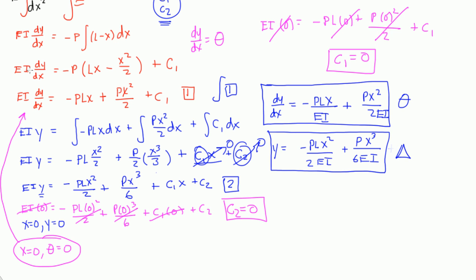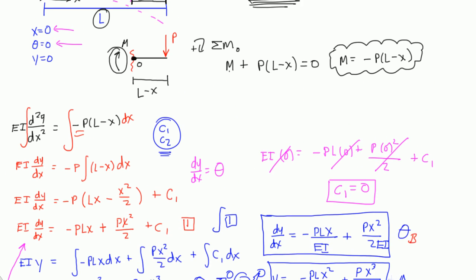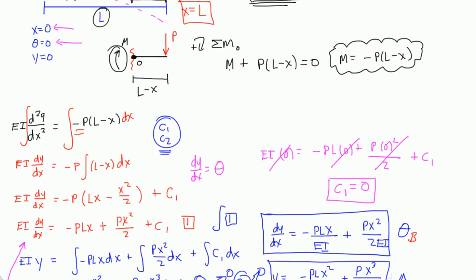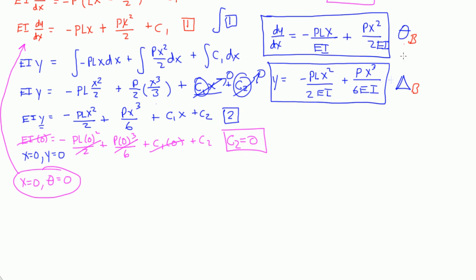So, if I wanted to figure out what theta B and the deflection at B was, I can just look at my diagram. B is located at the very end of the beam, or at x is equal to L. I can plug in x is equal to L into these equations to figure out what the slope at B is, and what the deflection at B is. So, why don't we do that for practice?